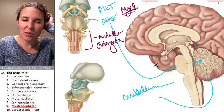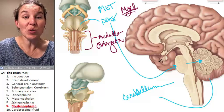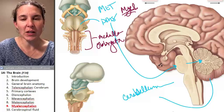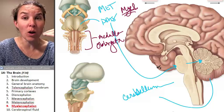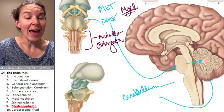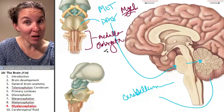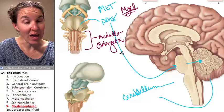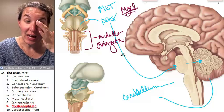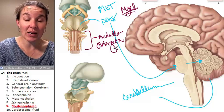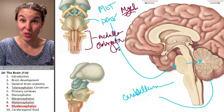The medulla oblongata essentially keeps you alive. Critters have been known to lose all of their upper brain parts, maintain an intact medulla oblongata, and survive. Mike the headless chicken is an example of that — his medulla oblongata is handling breathing and heart rate. It keeps you alive.